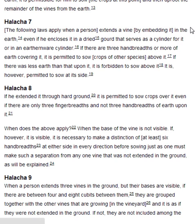Halakha 7. The following laws apply when a person extends a vine by embedding it in the earth, even if he encloses it in a dried gourd that serves as a cylinder for it or in an earthenware cylinder. If there are three handbreadths or more of earth covering it, it is permitted to sow crops of other species above it. If there was less earth than that upon it, it is forbidden to sow above it. It is, however, permitted to sow at its side.